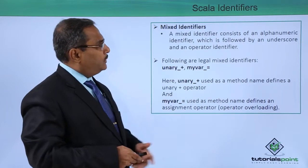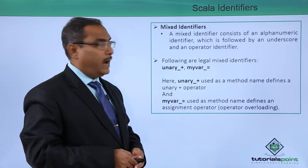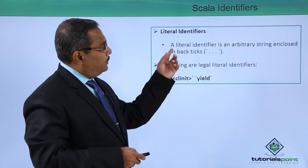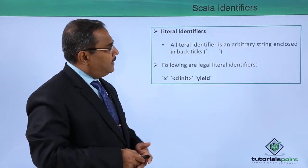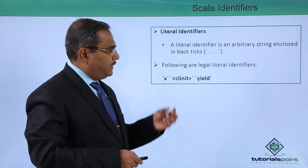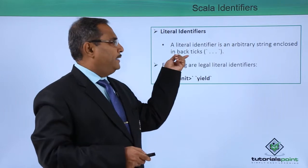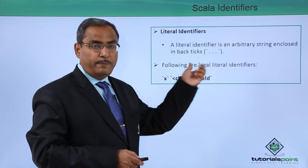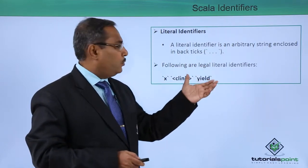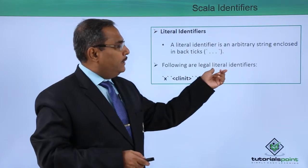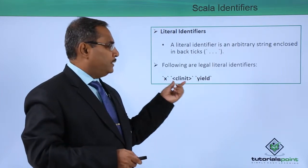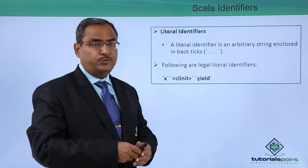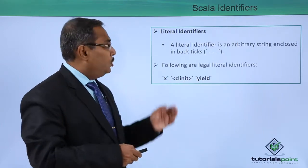The last category is literal identifiers. A literal identifier is an arbitrary string enclosed in back ticks. The back tick is also called a single back quote. The following are legal literal identifiers — each string is enclosed within single back ticks.